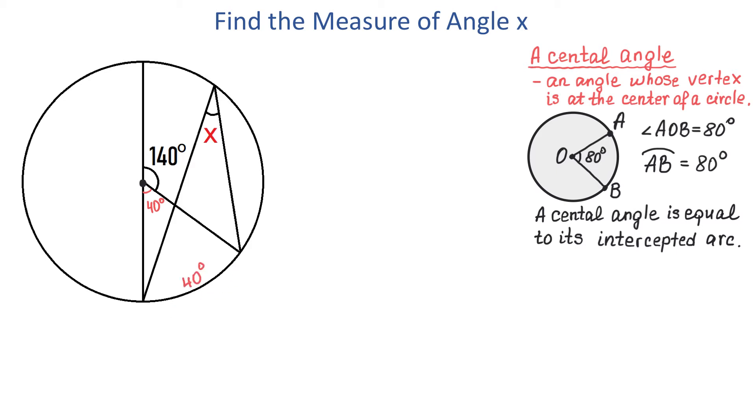Now let's add a few letters to this image. So here we will have point A, point B, point C and let the center be O. Then what we have so far is that the angle AOB equals 40 degrees and the arc AB is also 40 degrees.